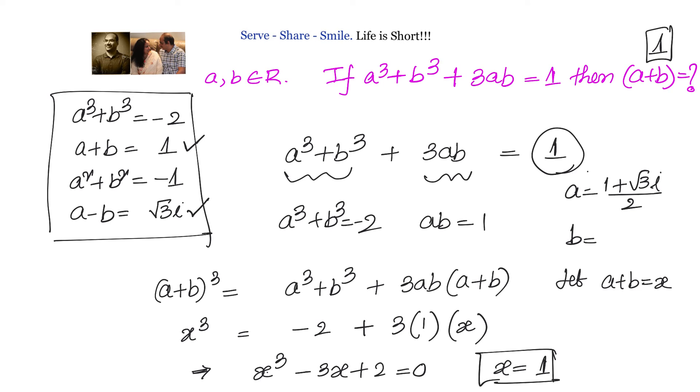And b = (1 - √3i)/2. So we got a + b = 1. If you have any better solution or think this solution is not correct, please let me know in the comments.